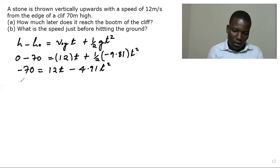So this is the equation that we're going to have. This will be basically the quadratic equation: 4.91 t squared minus 12 t minus 70 equal to zero.